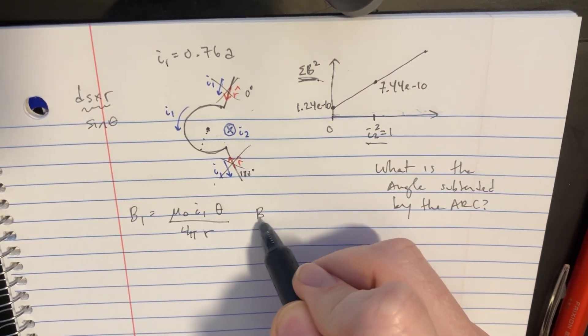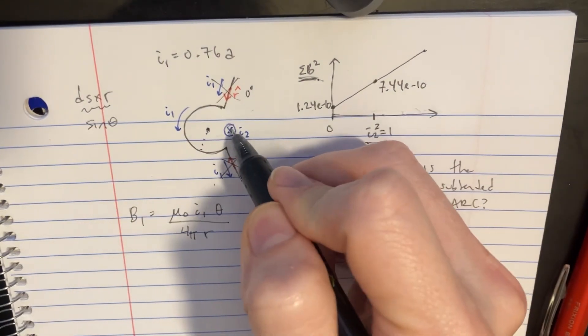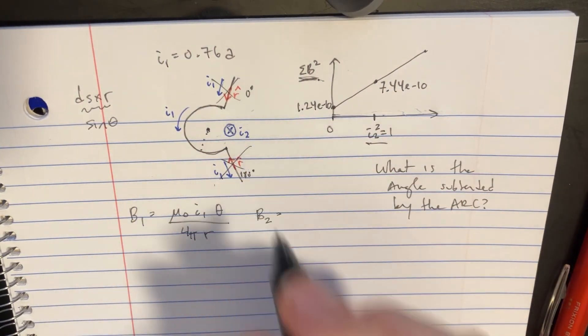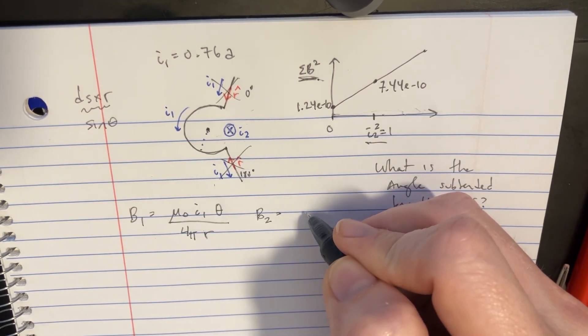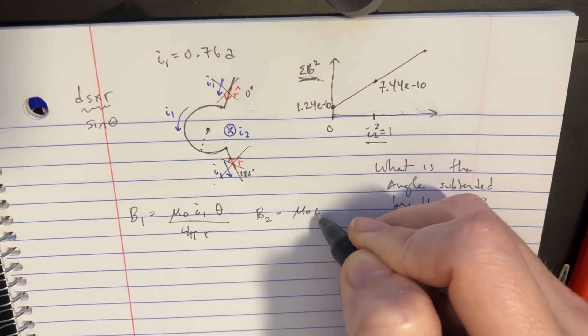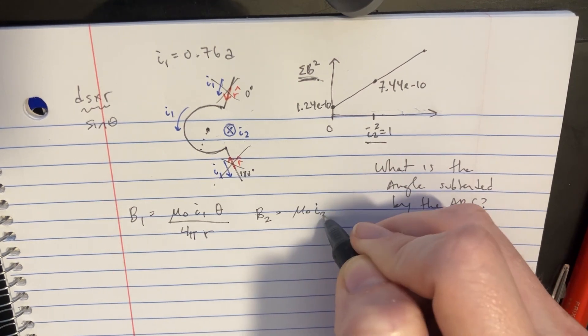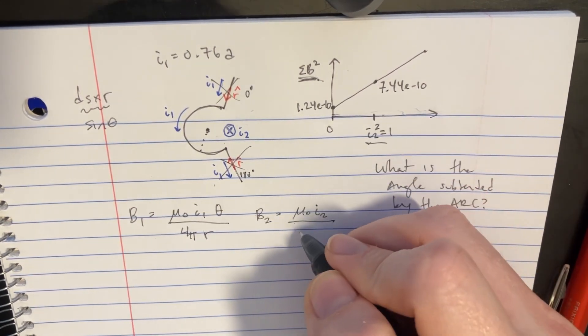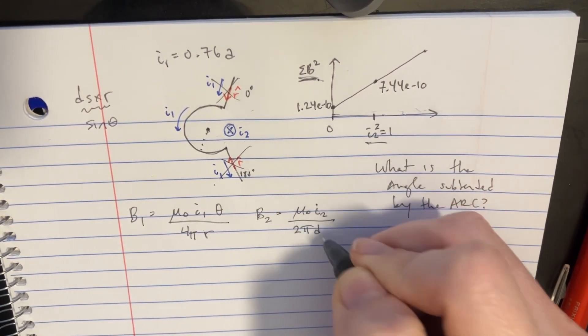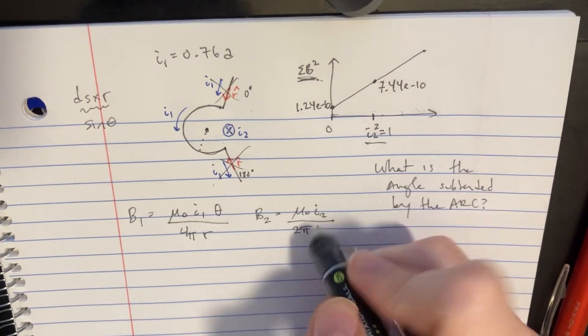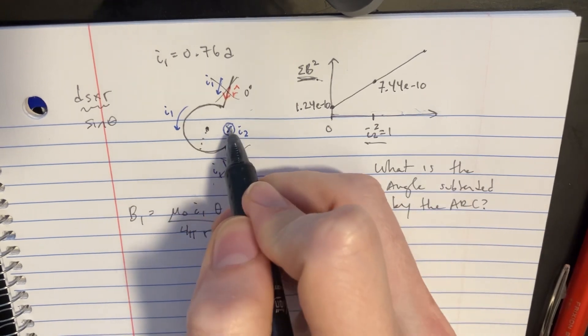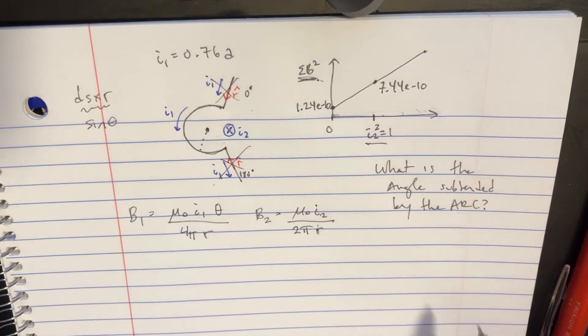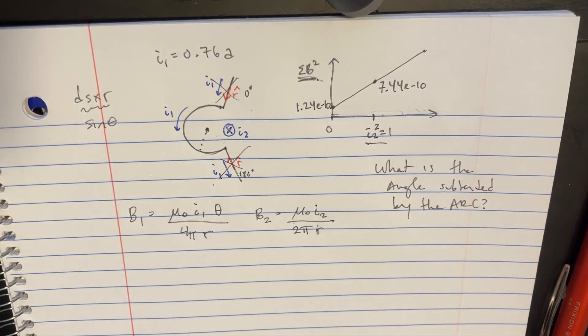And then for B2, that's going to be here. A very long wire. It's kind of infinite. We have a formula for that as well. That's going to be mu naught I2 divided by 2 pi D. And that's going to be the length away from it is going to be the radius. So that's pretty nice.